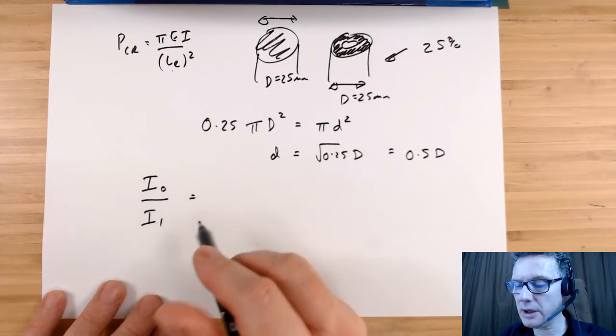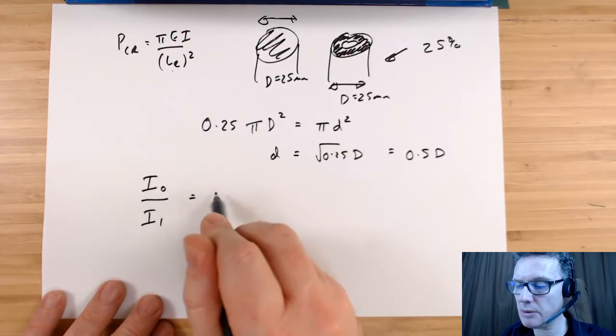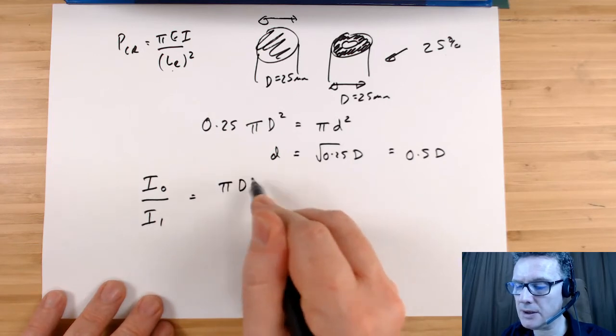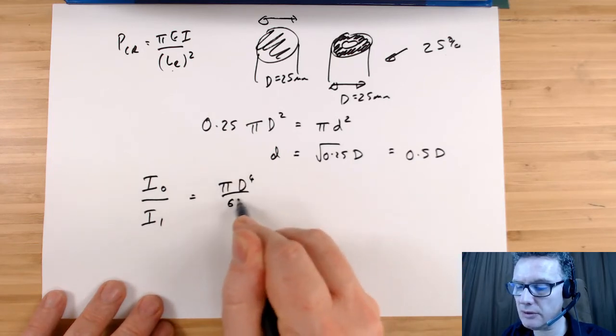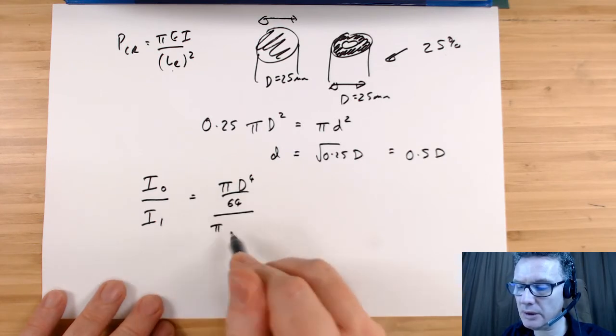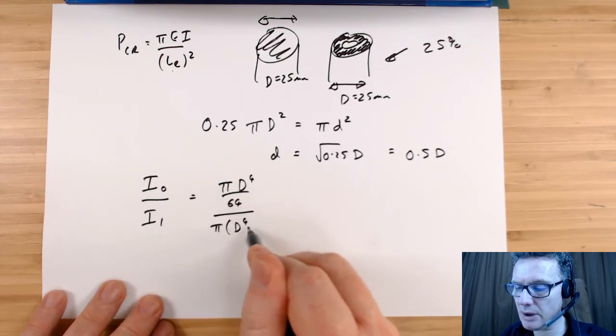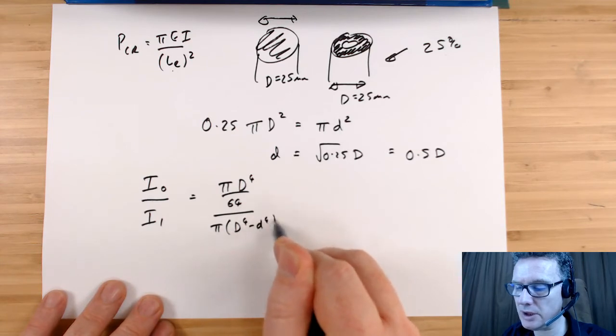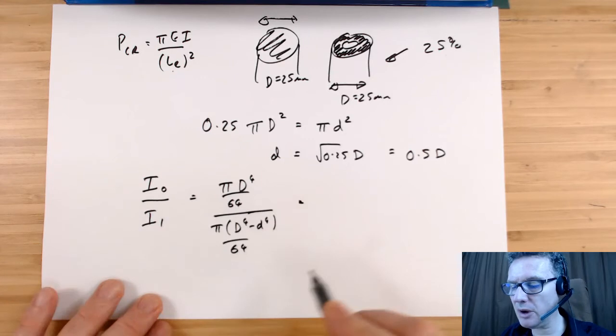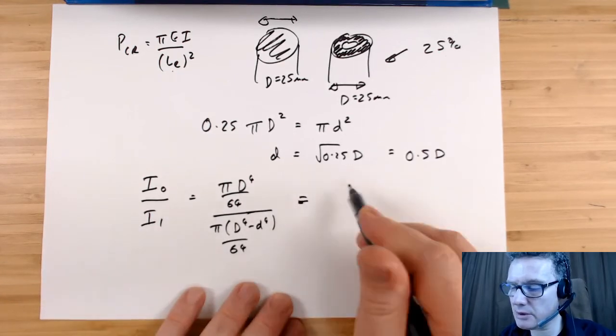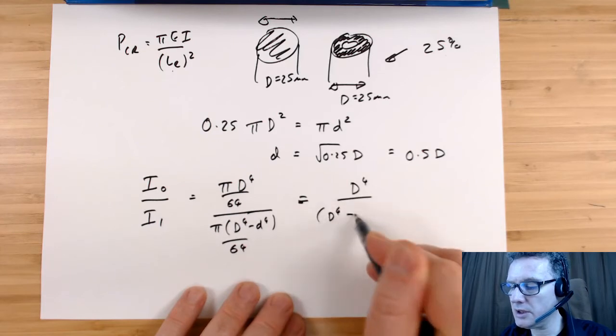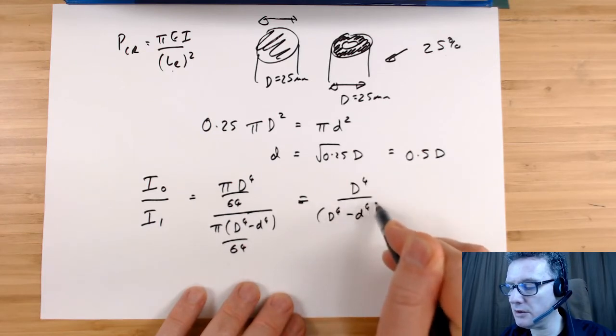The original I is going to be based upon π D to the power 4 over 64, and the new I is going to be π D to the power 4 take away little d to the power 4 over 64. The π's and the 64's are going to cancel, and we end up with D to the 4 over D to the 4 minus little d to the 4.